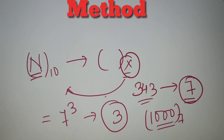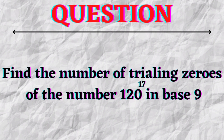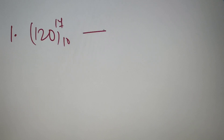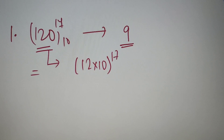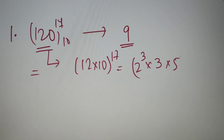Now let's discuss some problems that are usually asked in exams. According to our first question, we have to find the number of trailing zeros of 120 raised to the power 17 in base 10 when it is converted to base 9. We just have to find the highest power of 9 in 120^17. Now 120^17 is equivalent to (12 × 10)^17, and 12 equals 2² × 3, and 10 equals 2 × 5, so it is equivalent to (2³ × 3 × 5)^17.